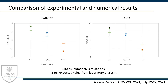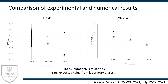Also for the citric acid in the right figure the results are very good. The lipids in the left figure are the hardest substance to predict. In fact, only the optimal granulometry falls in the range of the experimental data, while for the fine granulometry they are overestimated by about 3%, and for the coarse granulometry they are underestimated by about 5%.